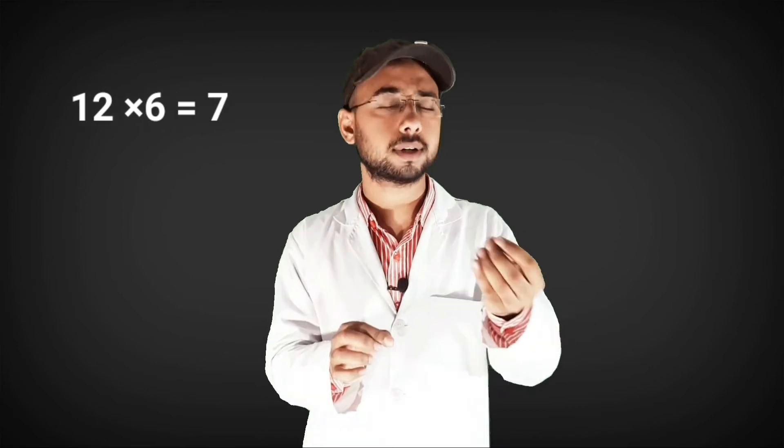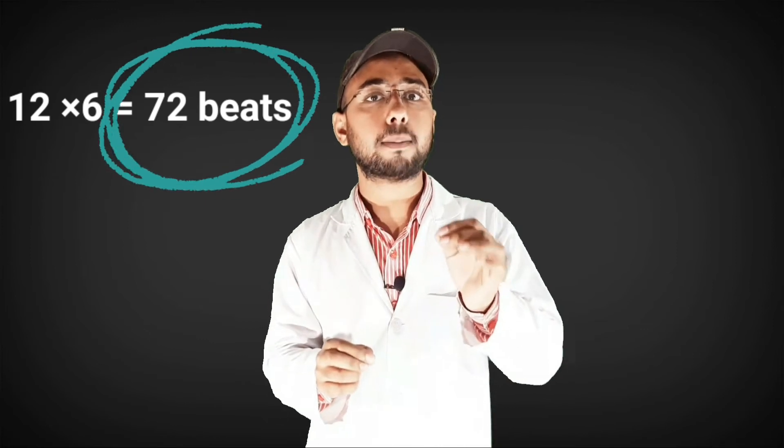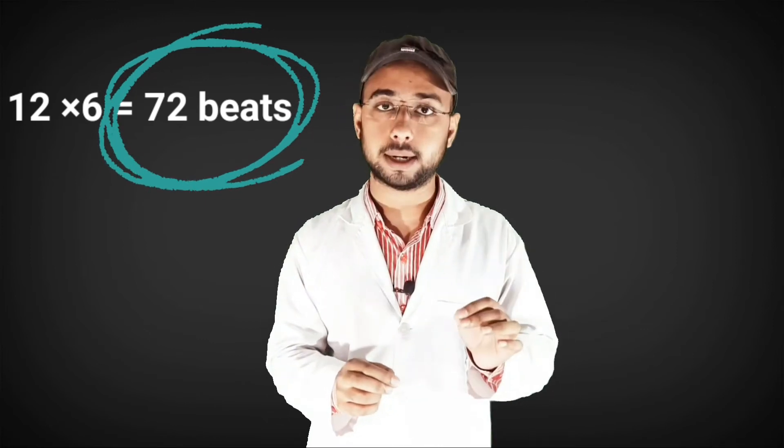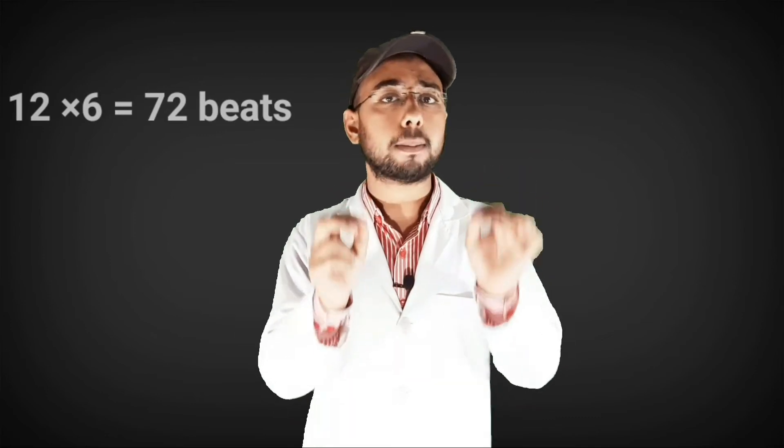Then you have to multiply 12 with 6. Whatever pulse you get in 10 seconds, you have to multiply with 6 so that you can get the amount of pulses in 1 minute, because 1 minute contains 60 seconds. So the amount of pulses in 60 seconds you get after multiplying this.